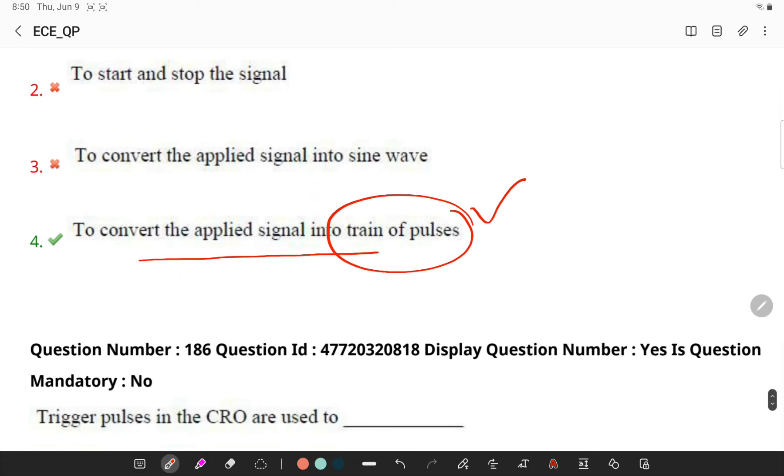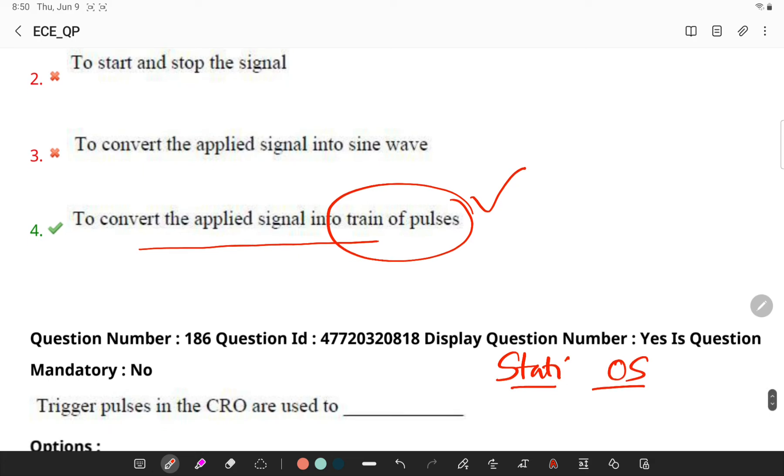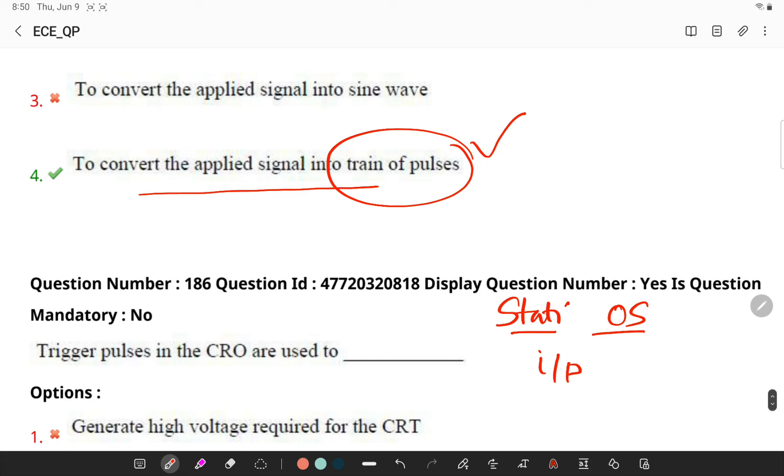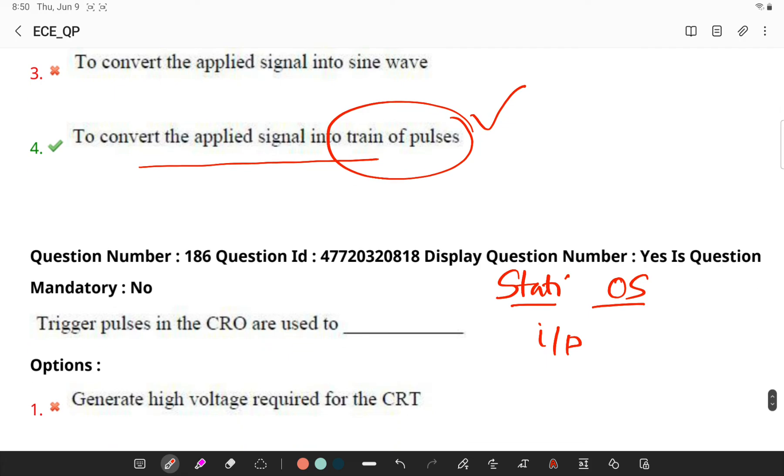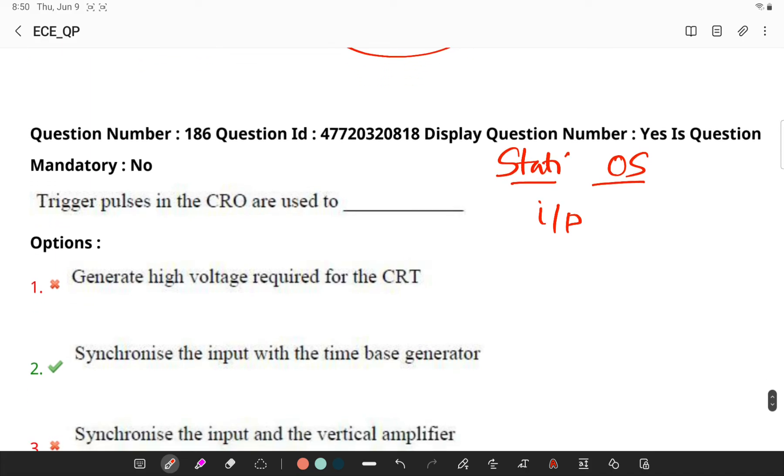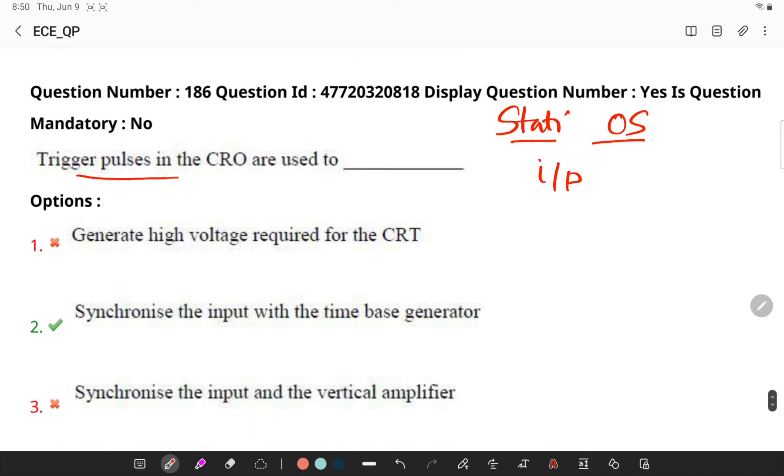Now trigger pulses in a cathode ray oscilloscope are used to - remember trigger pulses make repetitive waveforms which appear static on the oscilloscope display by repeatedly displaying the same portion of the input signal. These triggers respond to specific conditions in the incoming signal, making it easy to detect, for example, a pulse that is narrower than it should be. So trigger pulses are used to synchronize the input with the time phase generator.